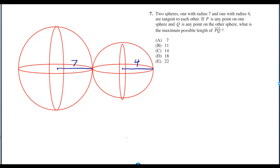Two spheres, one with radius seven and one with radius four, are tangent to each other. If p is any point on one sphere and q is any point on the other sphere, what is the maximum possible length of pq?